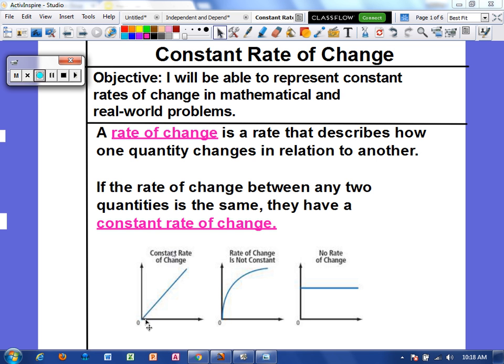A constant rate of change is going to create a diagonal line, and it's going to be linear. Remember, linear means it's a line whenever we graph it. Now, this right here would not be a constant rate of change because it has a curve. And then here there would be no rate of change because the y value stays exactly the same. So a constant rate of change is going to be a diagonal linear graph.